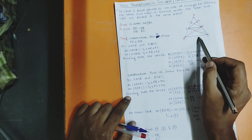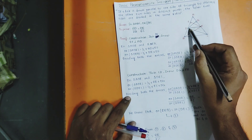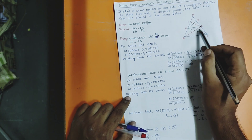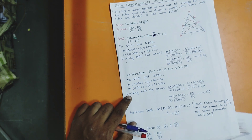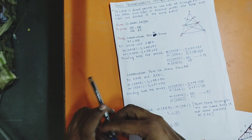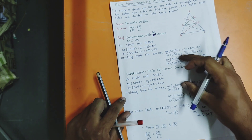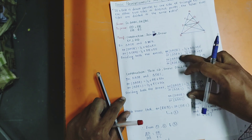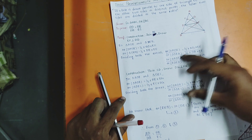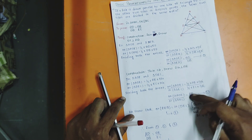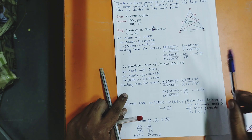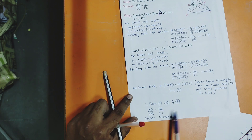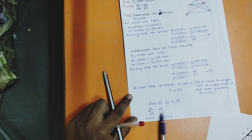Since DE is the base and BC and DE are the two parallels, area(DEB) = area(DEC). Numerator is the same for both equations. So I can replace DEC with DBE — and this both become equal. Equating equations 1, 2, and 3: AD by DB equals AE by EC. Hence proved.